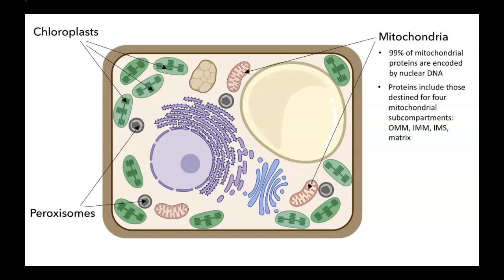Another thing to bear in mind is that these organelles have more than one subcompartment. For example, we can divide mitochondrial proteins into four classes: those found in the outer mitochondrial membrane, the inner mitochondrial membrane, the intermembrane space, and the matrix.